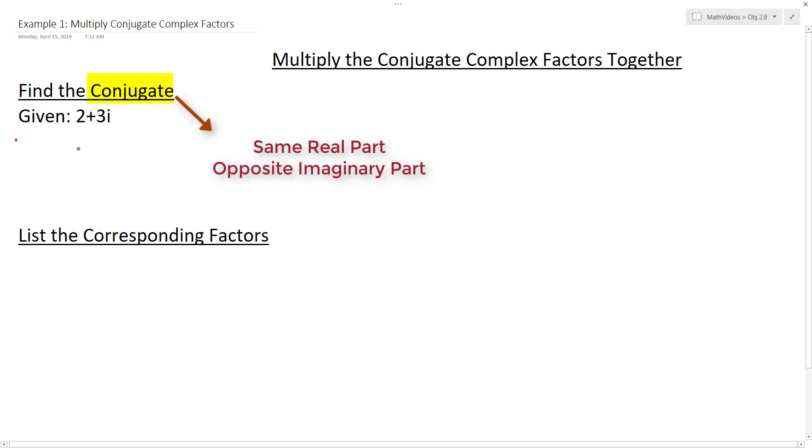So the real part is 2, so for our conjugate it will also be 2. And the imaginary part is 3, so for our conjugate it will be opposite sign, so it will be negative 3. And then keep your i. So the conjugate of 2 plus 3i is 2 minus 3i.